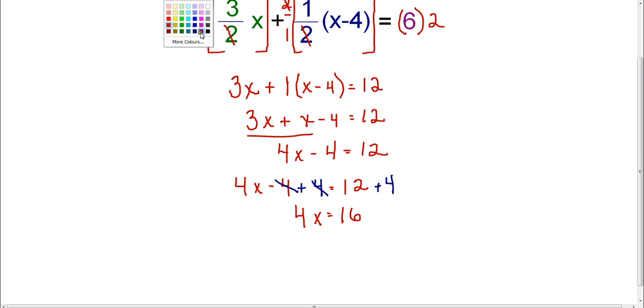And now I'm down to a one-step equation. 4 times x equals 16. The opposite of multiply is divide. So I'm going to divide by 4 on both sides and I end up with x equals 4. So my final answer is x equals 4.